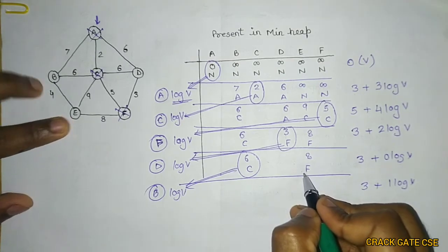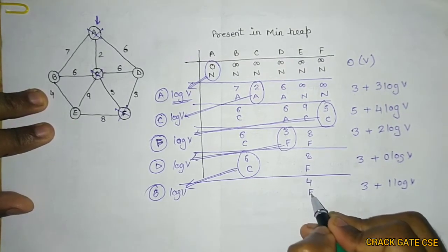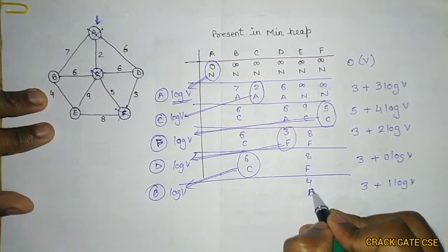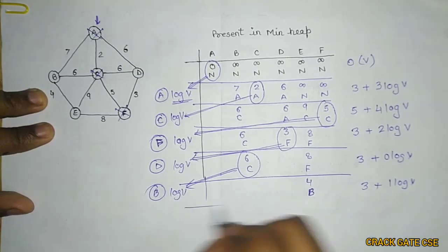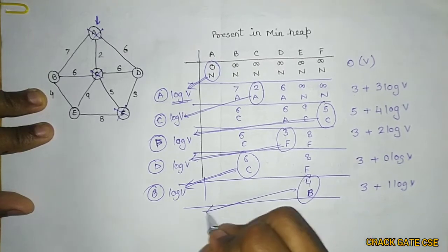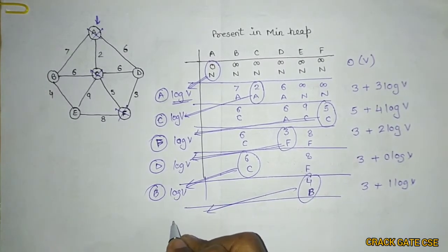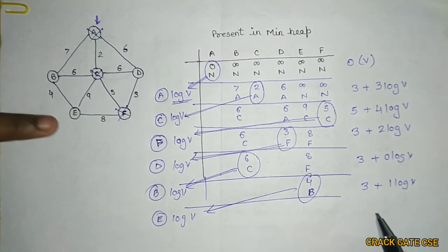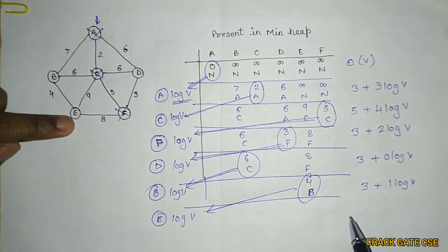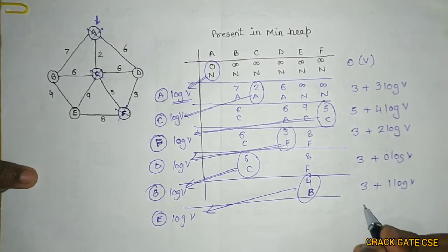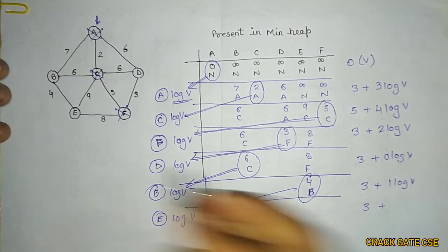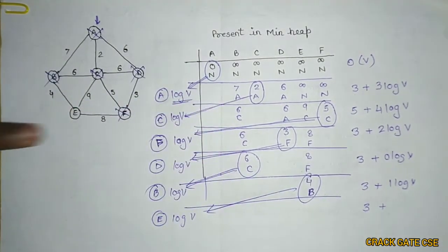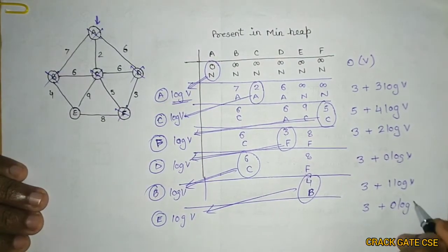The key for E was 8 (parent F), but the new value from B is 4, so we update to 4 with parent B. The next minimum is 4 (vertex E). We extract E, taking O(log V). E's adjacent vertices are F, C, B — all already covered. So we perform the decrease key operation at 0 places: 0 log V.